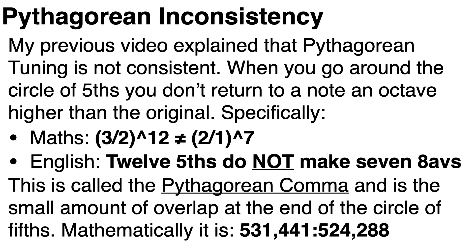Now going back to Pythagorean tuning. For those of you who watched my previous videos on tuning systems, you'll know that Pythagorean tuning is not consistent. When we went all the way around the circle of fifths, we didn't end up back on our original note an octave higher. If our original note was 100 hertz, an octave above that should be 200 hertz. But we find that when we go all the way through the circle of fifths, we actually get to 202.7 hertz, slightly more than an octave.